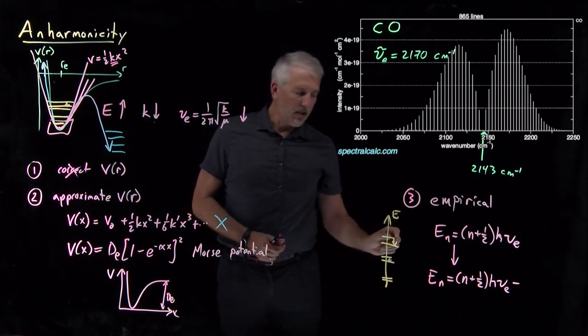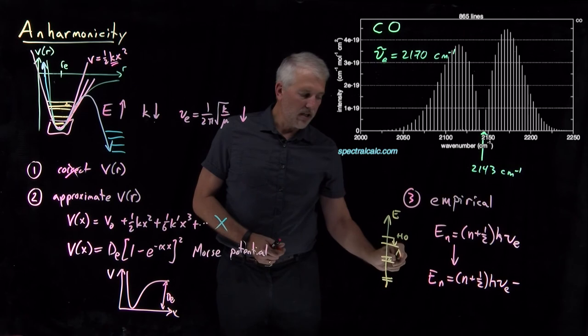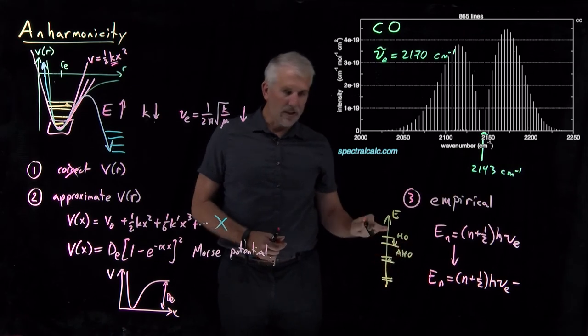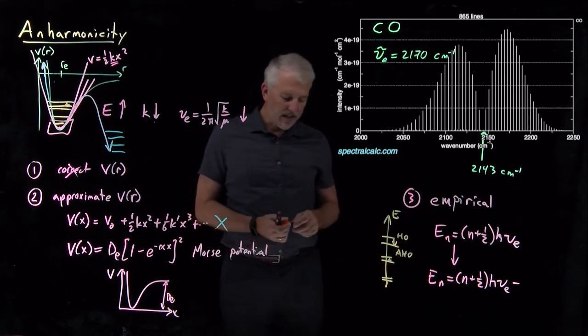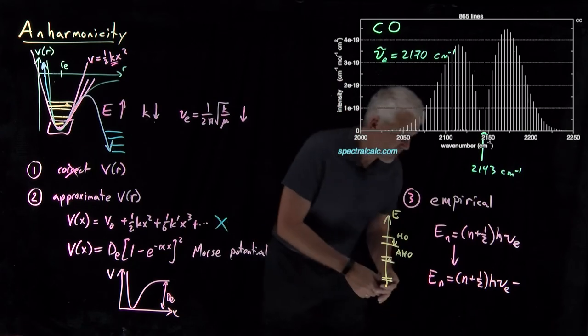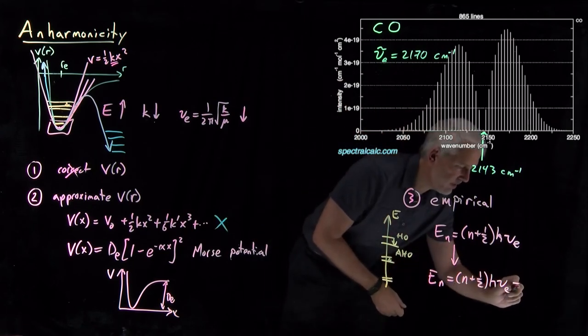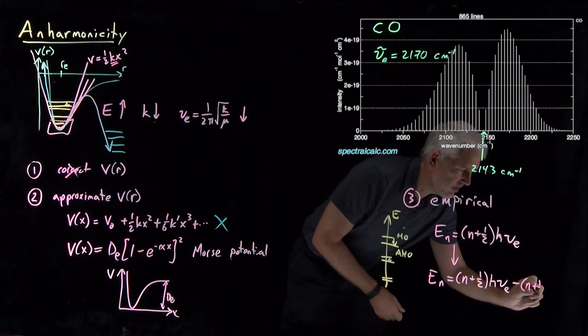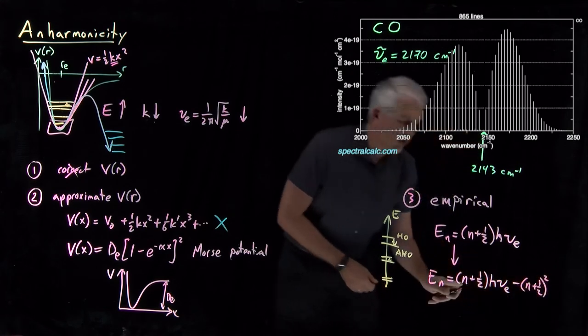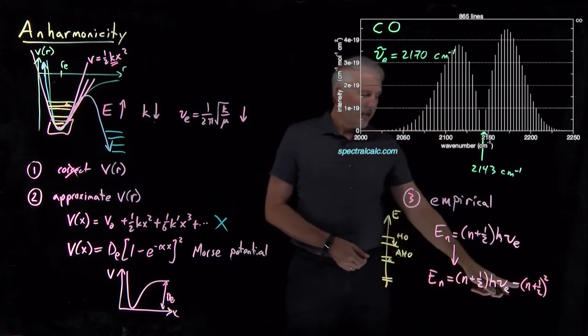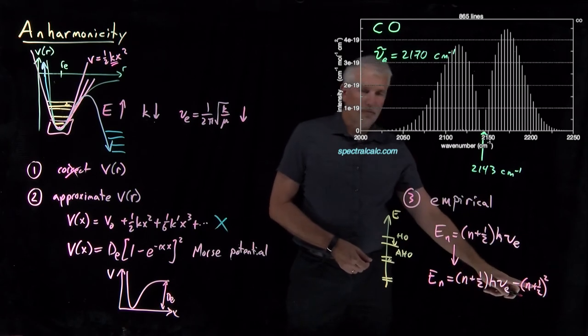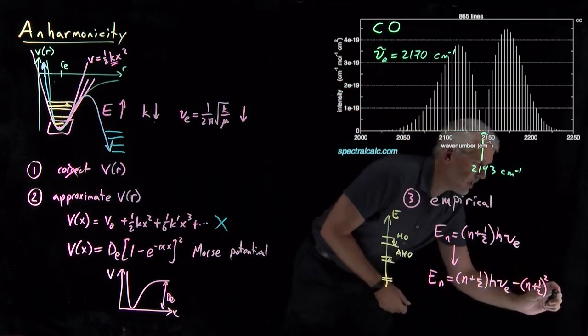These energy levels are anharmonic oscillator. We want a correction that's changing in size as we go up the ladder. One way to do that would be to take our quantum number n plus a half.